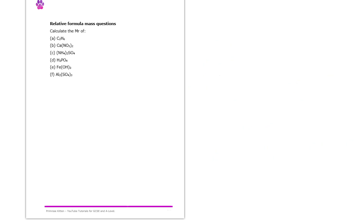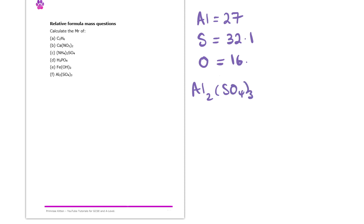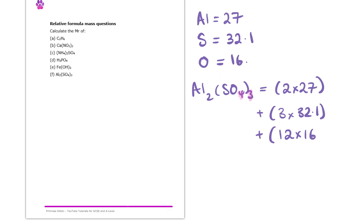For the last part of this exercise, part F, we have aluminium sulfate. Aluminium has a mass of 27, sulfur has a mass of 32.1, and oxygen has a mass of 16. Looking at the formula Al₂(SO₄)₃, we have two aluminiums — two times 27 — and three sulfurs — three times 32.1. For the oxygens, because there is a four inside and a three outside the brackets, we have 12 oxygens — 12 times 16. That gives a mass of 342.3, so the Mr of aluminium sulfate is 342.3 grams per mole.